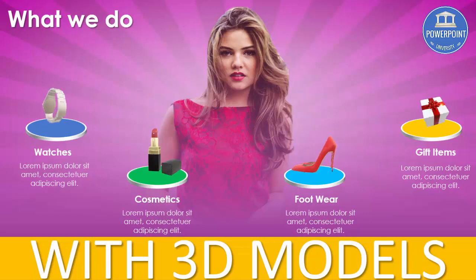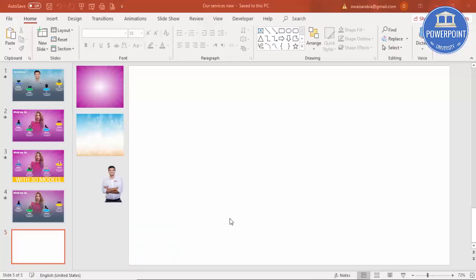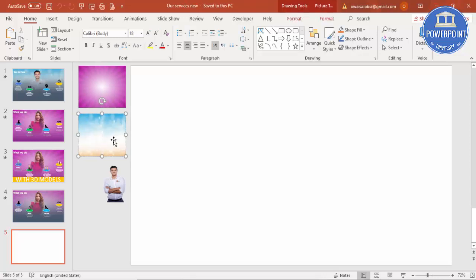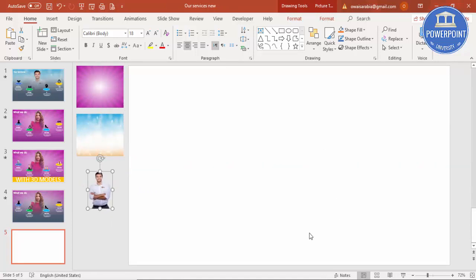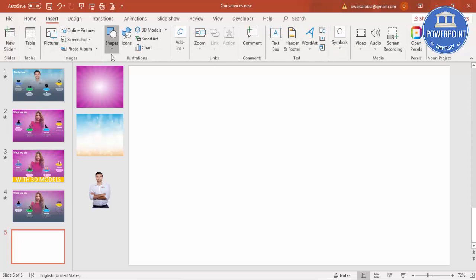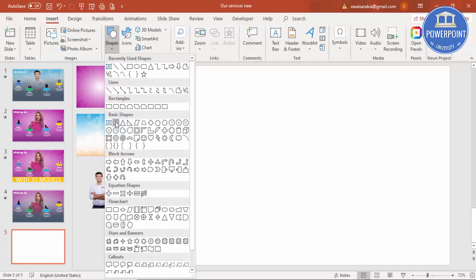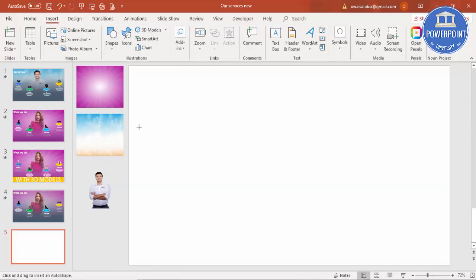Let's see how to do this in PowerPoint. I've downloaded two images from the internet - one I'm going to use for the background, and the PNG file I'm going to use to show on the back side. I'm going to insert shapes and select an oval shape.